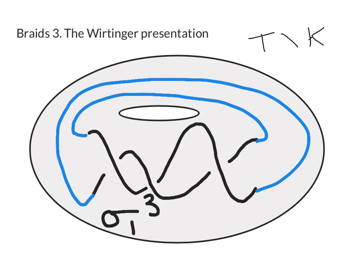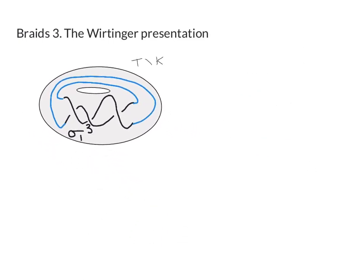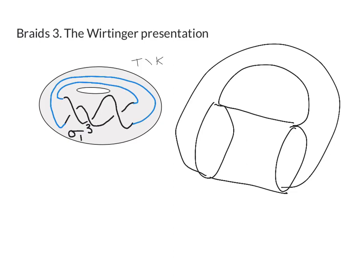So the way we're going to proceed is to observe that T minus K is actually a mapping torus and we know how to find the fundamental group of a mapping torus using Van Kampen's theorem. What's a mapping torus again? It's where you have some space, you multiply that space with an interval and you glue it back to itself using some non-trivial gluing map, let's say phi.